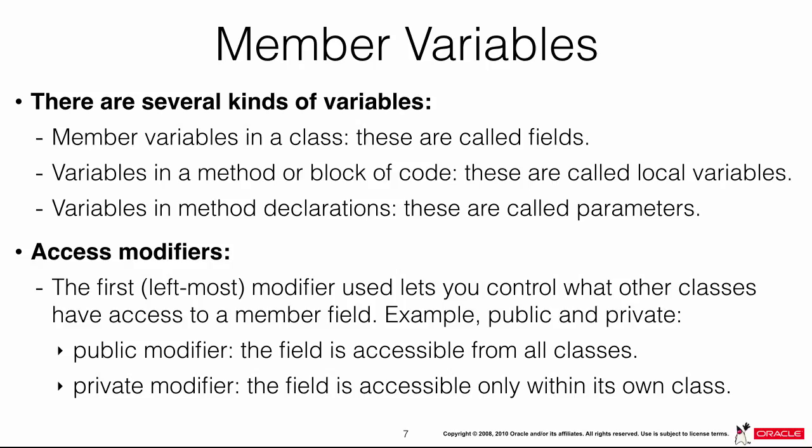You also have access modifiers — the leftmost modifier used to control what other classes have access to member fields. Two popular ones are public and private. Public makes a field accessible from all other classes. Private does not make these fields accessible outside the class where the field exists — it is only accessible within its own class.